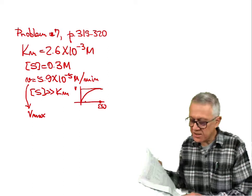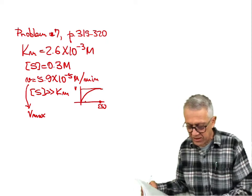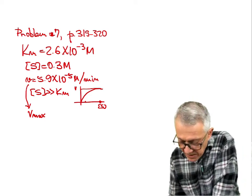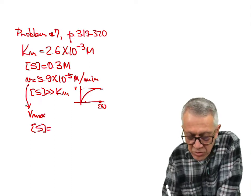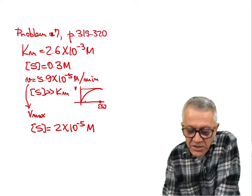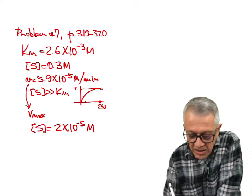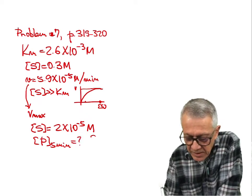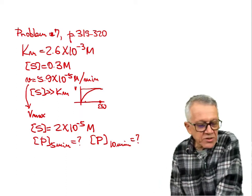The problem asks: if the initial substrate concentration were 2×10⁻⁵ molar — which is much smaller than the Km — what would be the product concentration after 5 minutes and after 10 minutes? Two questions.